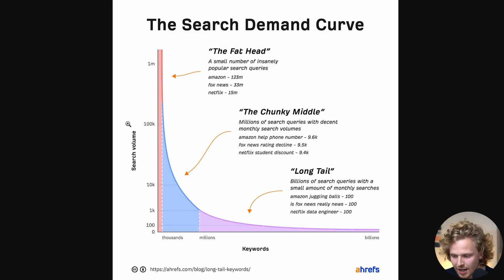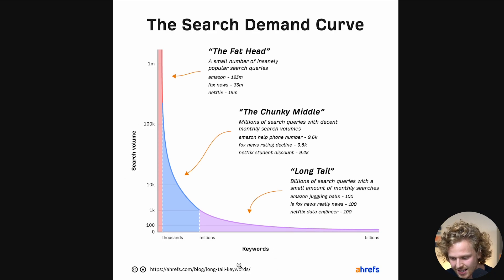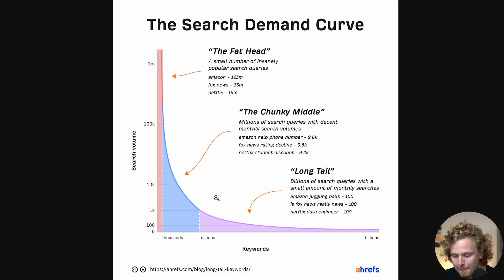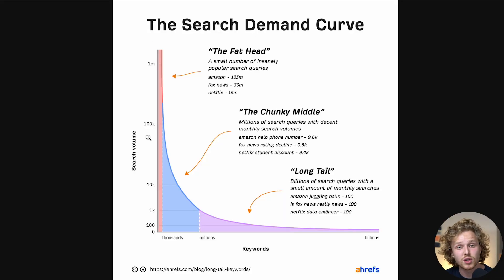If you guys are just now learning about keywords, there's a really important topic we need to cover. I'm sure you've heard about short tail versus long tail keywords. Most people think that short tail and long tail keywords have to do with the specific length of the keyword, but instead it has to do with the actual search demand curve. Here's a diagram from Ahrefs perfectly outlining the search demand curve. We have search volume on the y-axis and keywords on the x-axis. There's going to be a fat header — the short tail keywords — which is a small number of insanely popular search queries with very high search volume. Then we have a massive number of keywords — the long tail of the search demand curve — that don't have as much traffic, but there's a lot more of them. So this is basically what short tail versus long tail keywords mean.